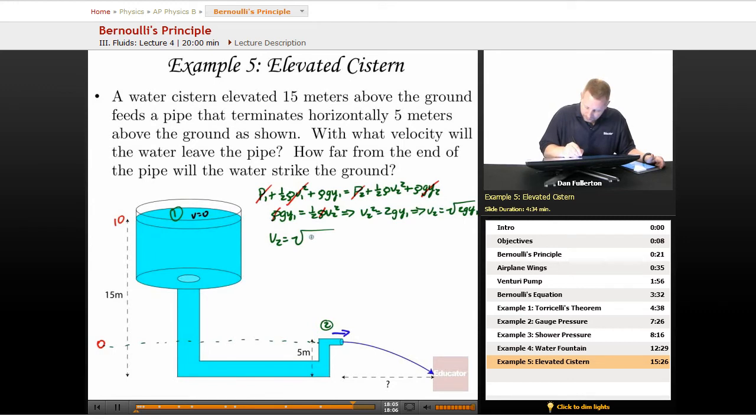So v2 will be equal to the square root of two times g, 10 meters per second squared, times y1, 10 meters, or square root of 200. That's about 14.1 meters per second.